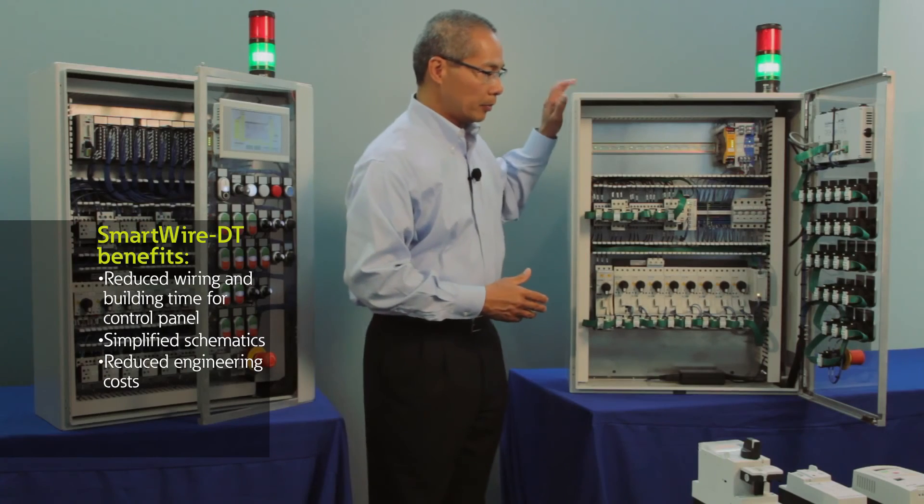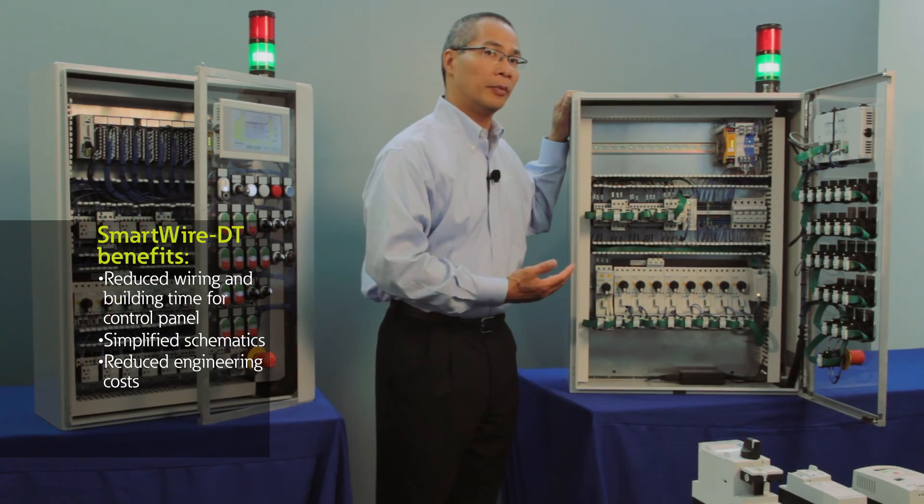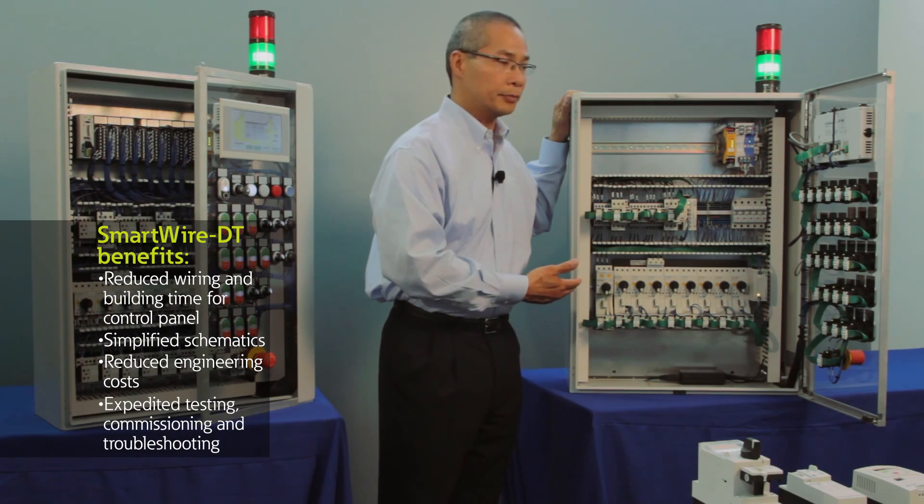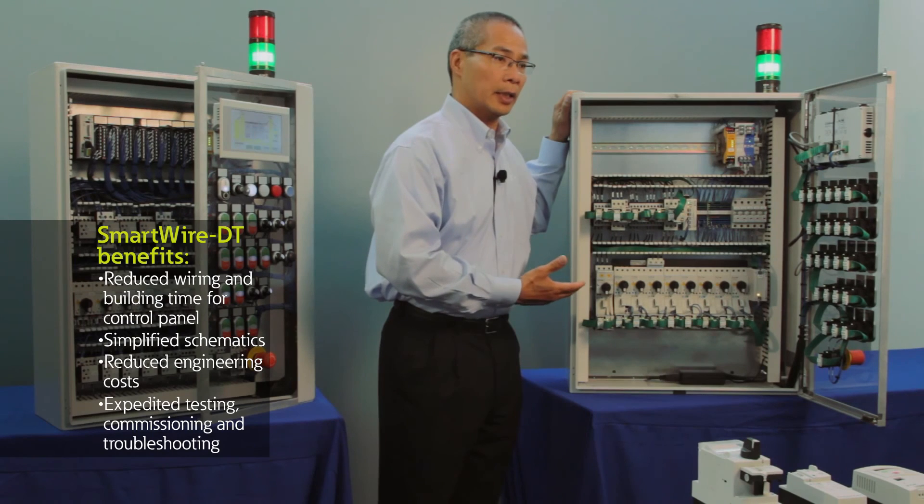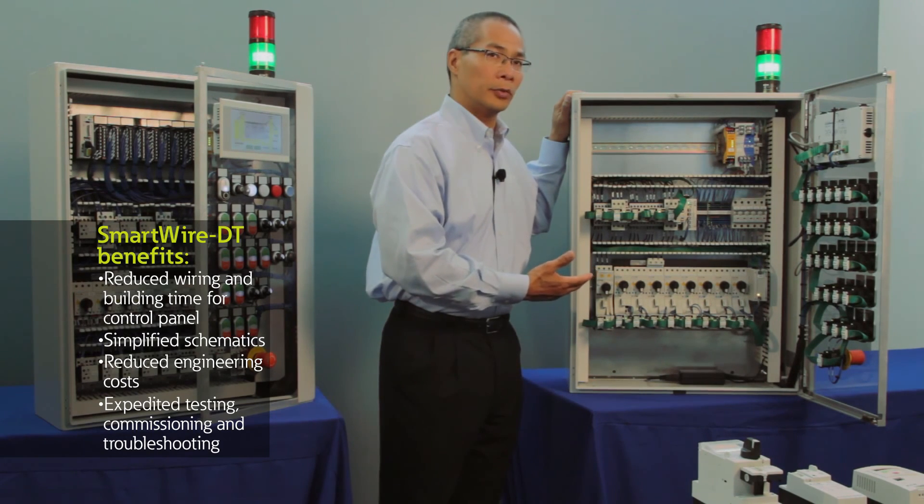And finally, apart from what you'll notice, less wires means basically less time it takes to actually test and verify the connections in the panel. And also, what that means on site is that it takes less time to commission and troubleshoot the panel when you're doing your final installation. Thank you for watching. To find out more about SmartWire DT, please visit our website at www.eaton.com/SmartWireDT, all one word. Thank you.